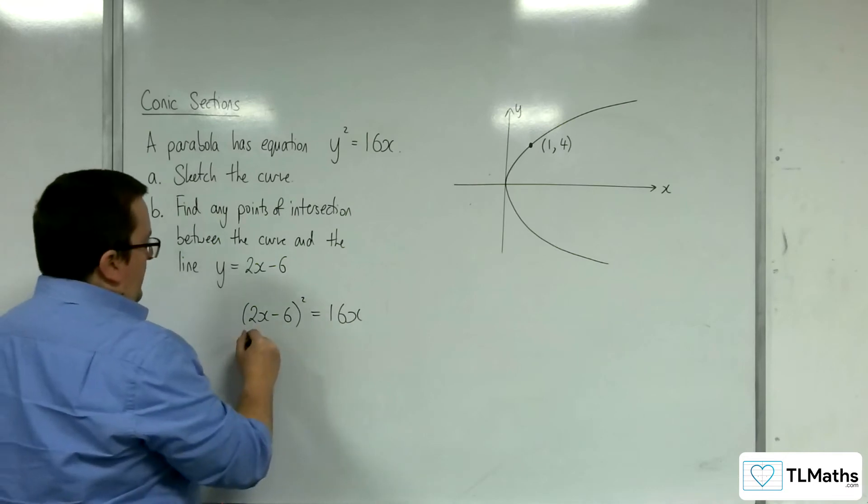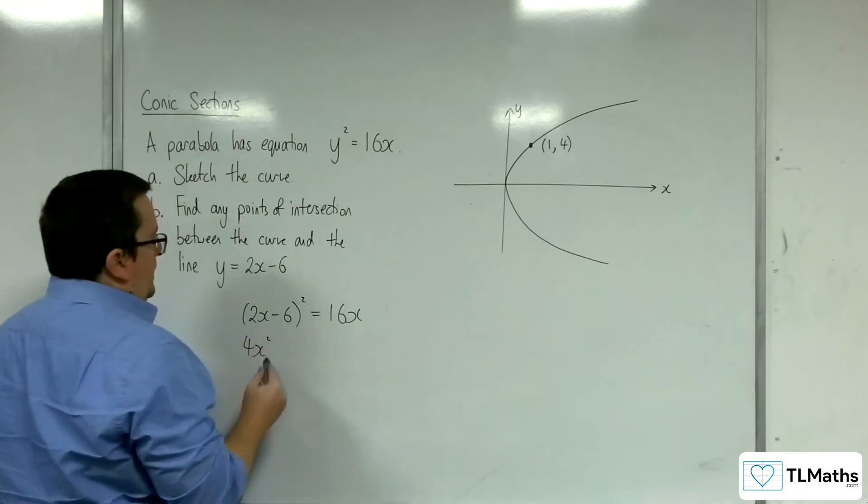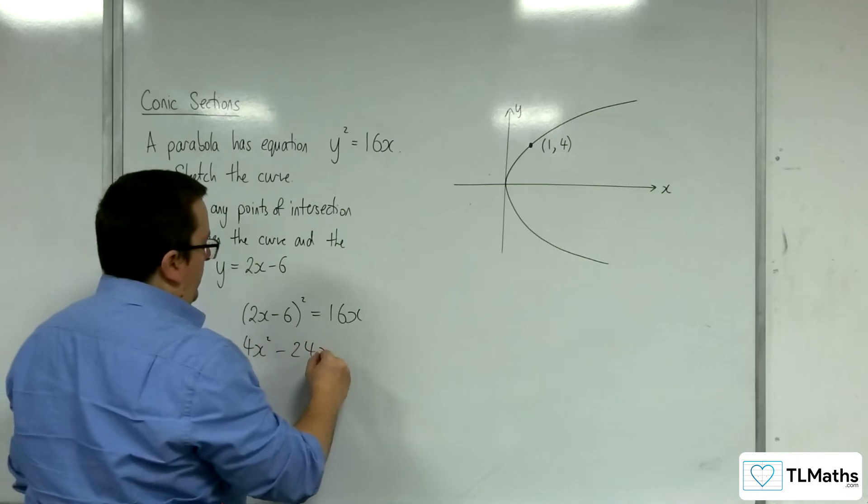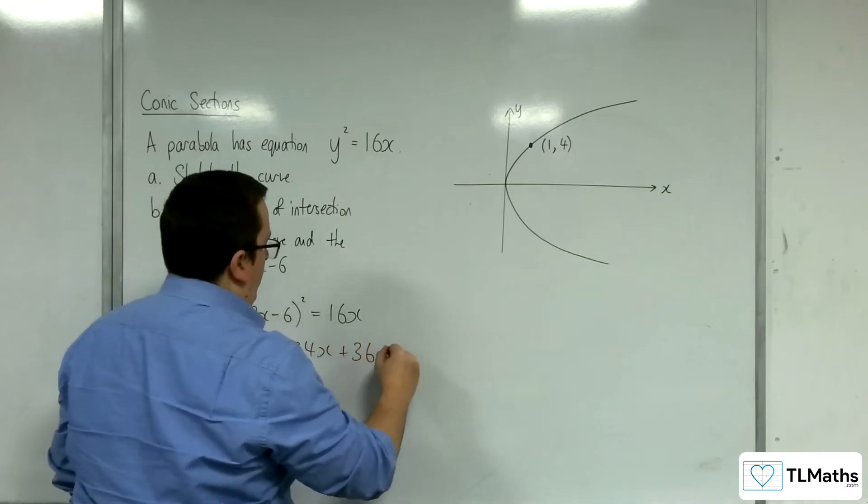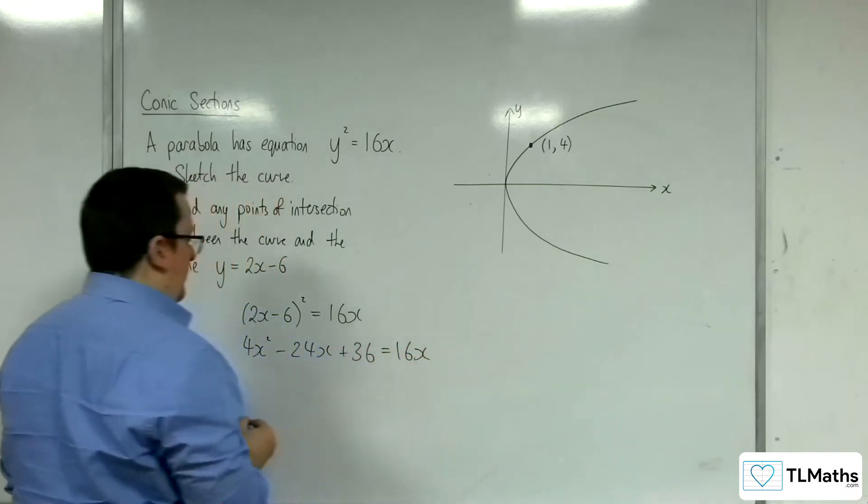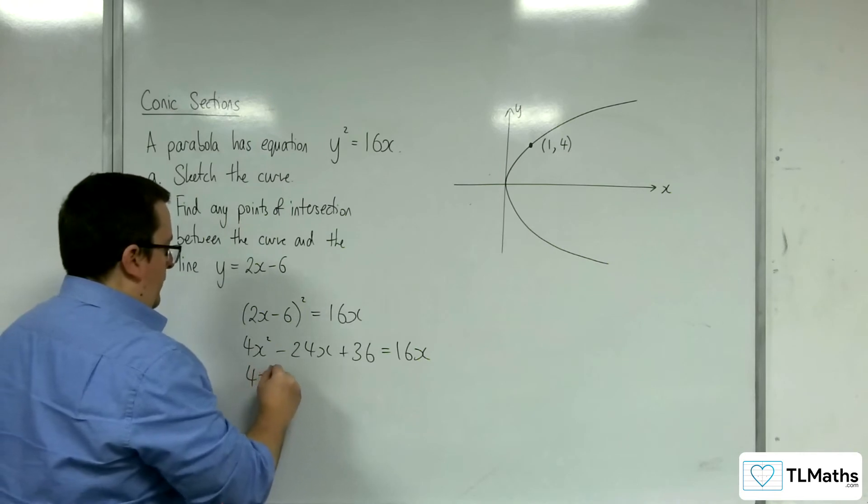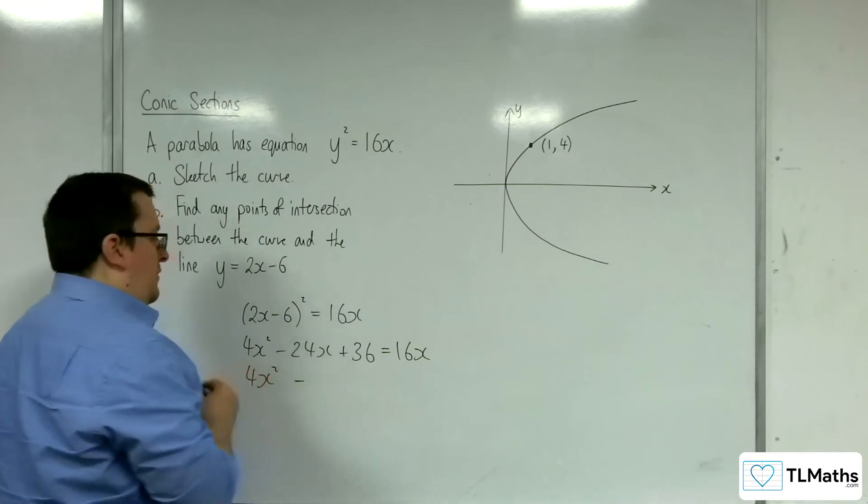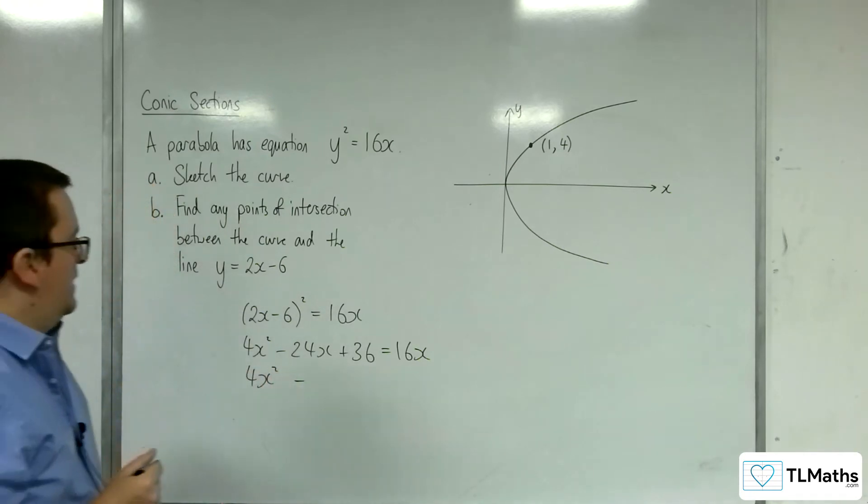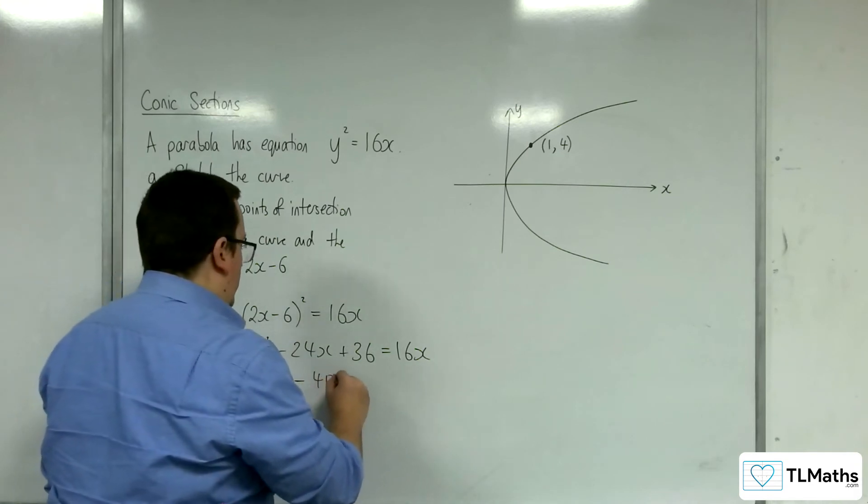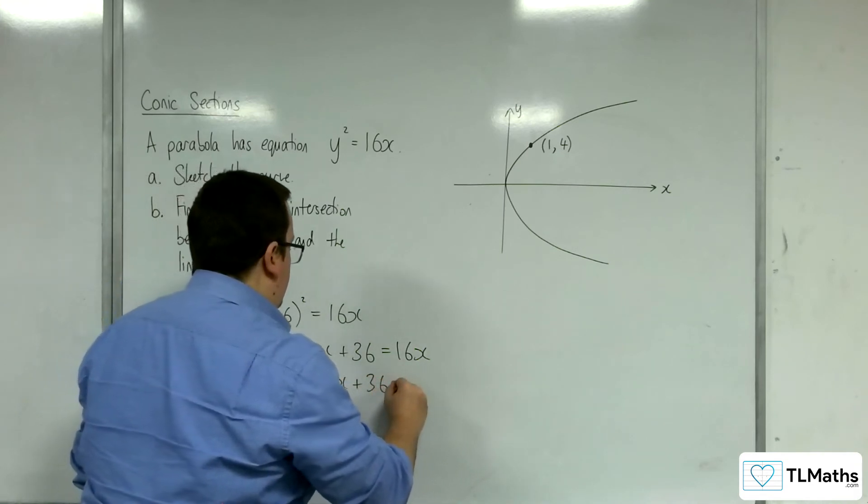So I'm going to expand this out. 4x squared, we've got take away 12x, so take away 24x plus 36 is equal to 16x. So 4x squared, take 16x from both sides, we're going to get to minus 40x plus 36 is 0.